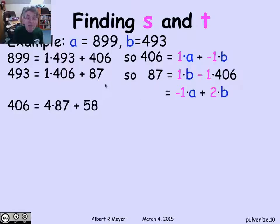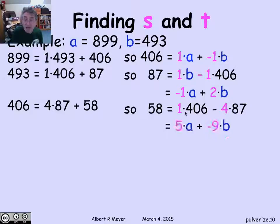After this, we find the quotient of 406 by 87 and the remainder. When you divide 406 by 87, you get a quotient of 4 and a remainder of 58, which means the remainder 58 is 406 minus 4 times 87. Looking above, I have the coefficients of 406 for a and b, and I have the coefficients for 87 for a and b. I multiply those by 4 and add, and I wind up that 58 is 5a plus minus 9b.